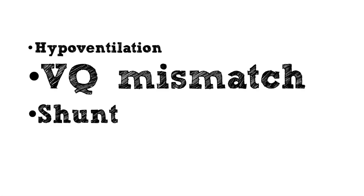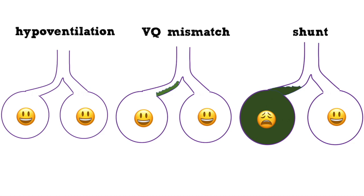So we've talked about hypoventilation, VQ mismatch, and shunting — how can we actually use this clinically? Let's think about what happens if we expose patients with each mechanism to 100% oxygen or a very high inhaled amount of oxygen. In hypoventilation and VQ mismatch, flooding these patients with oxygen means there's so much oxygen in their trachea that even with inadequate bulk flow to the alveoli in hypoventilation, or obstruction in VQ mismatch, the oxygen concentration is high enough that sufficient oxygen will reach the alveoli and saturation will be okay.